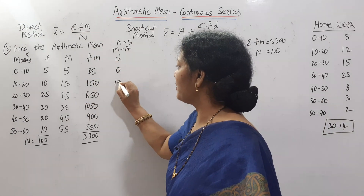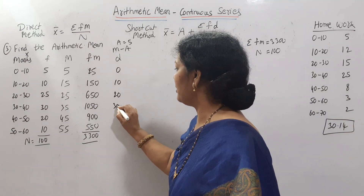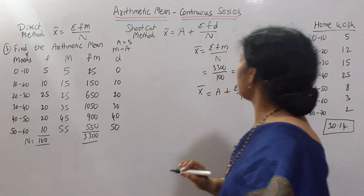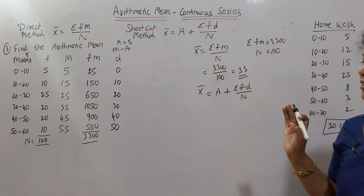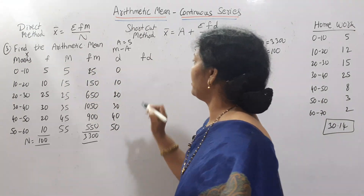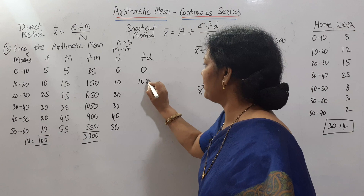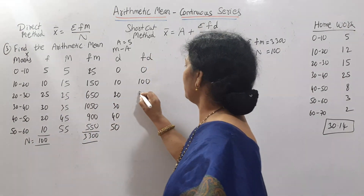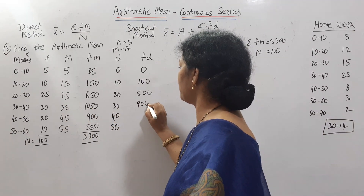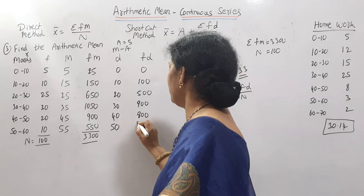Now we calculate frequency into deviation, f × d. So: 5 × 0 = 0, 10 × 10 = 100, 25 × 20 = 500, 30 × 30 = 900, 20 × 40 = 800, and 5 × 50 = 500. Totaling these up: 0 + 100 = 100, + 500 = 600... wait, running total gives σfd = 2800.